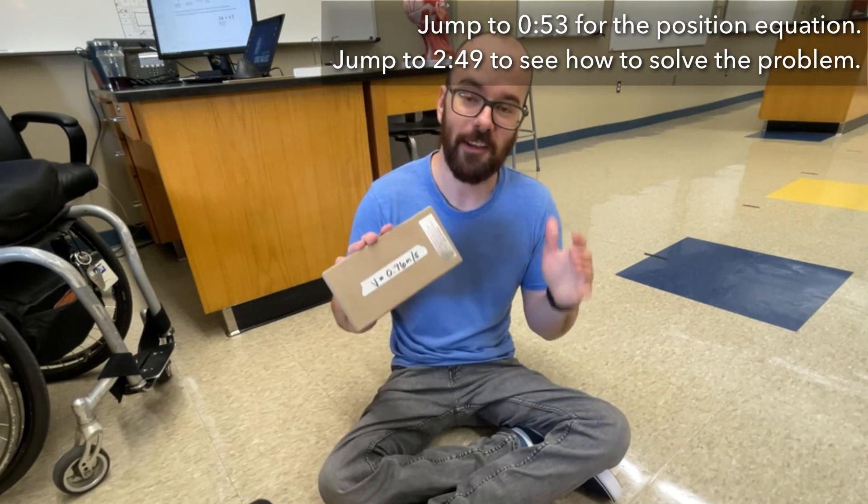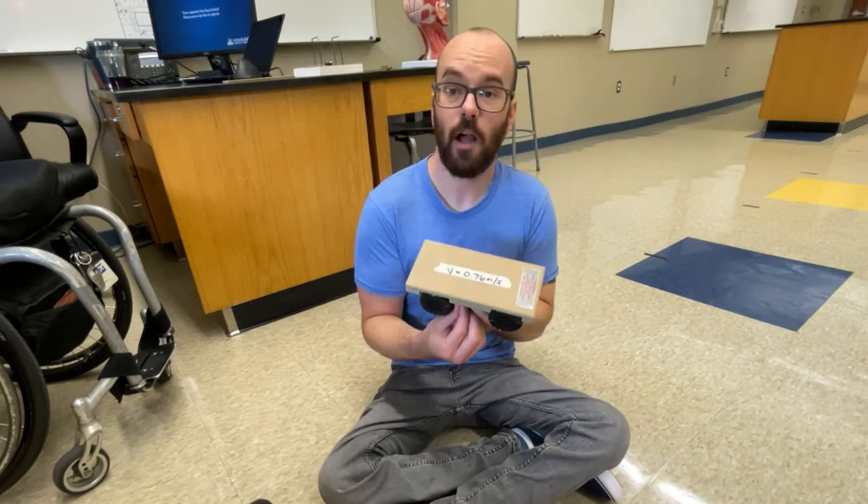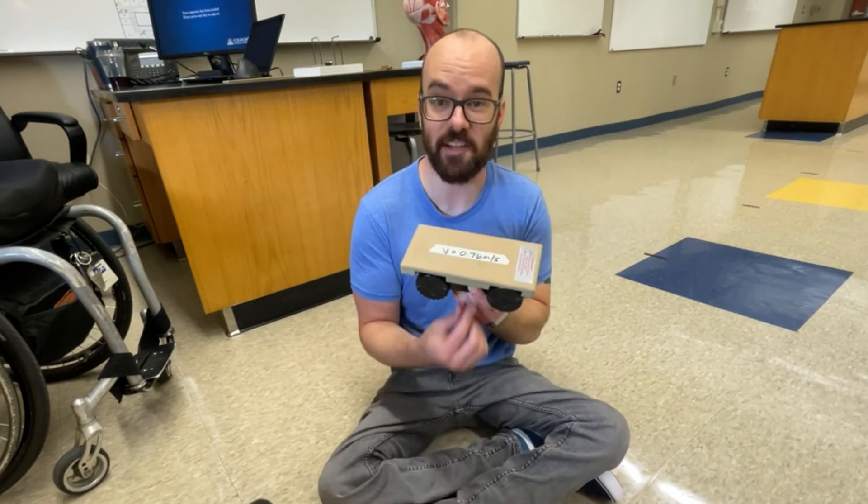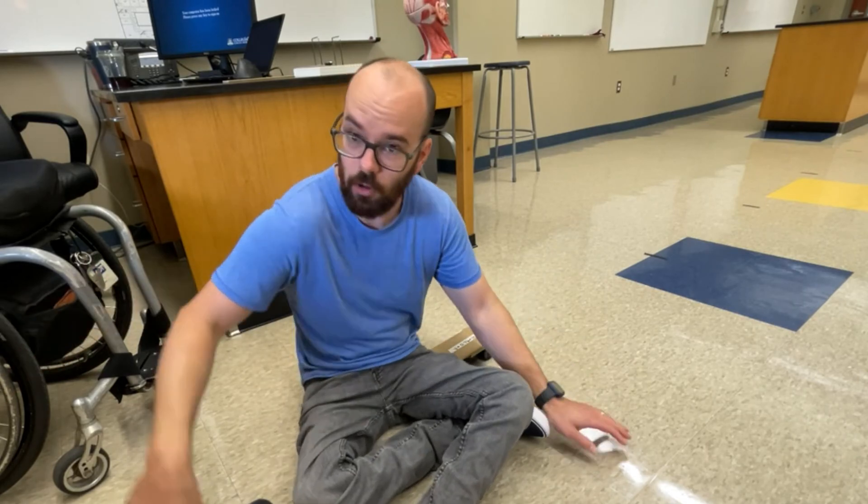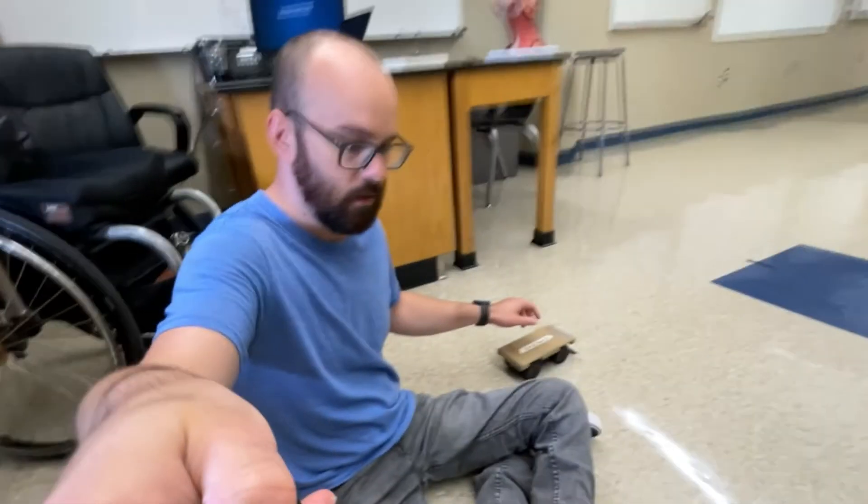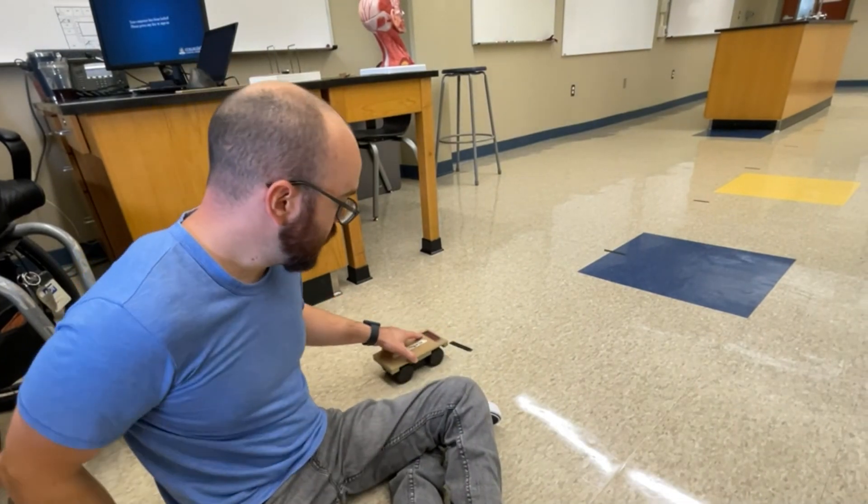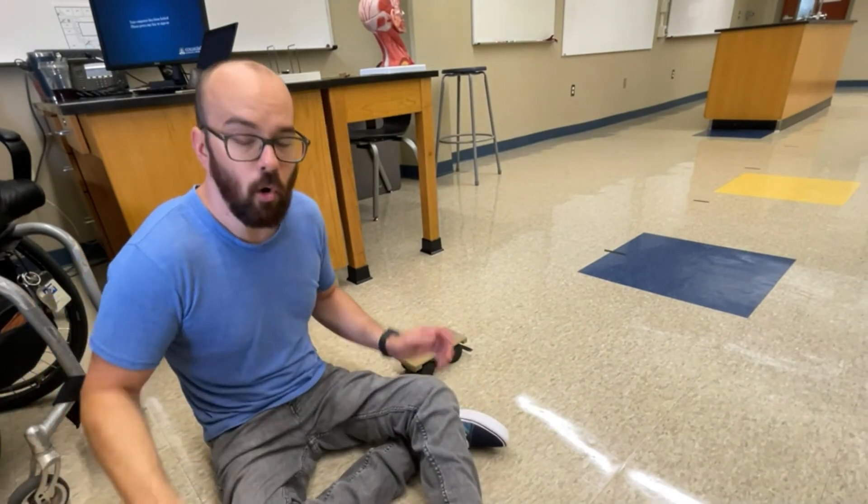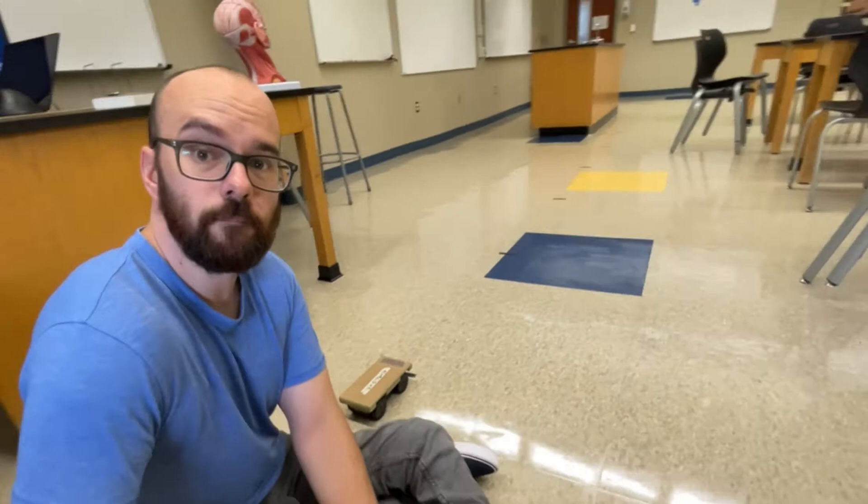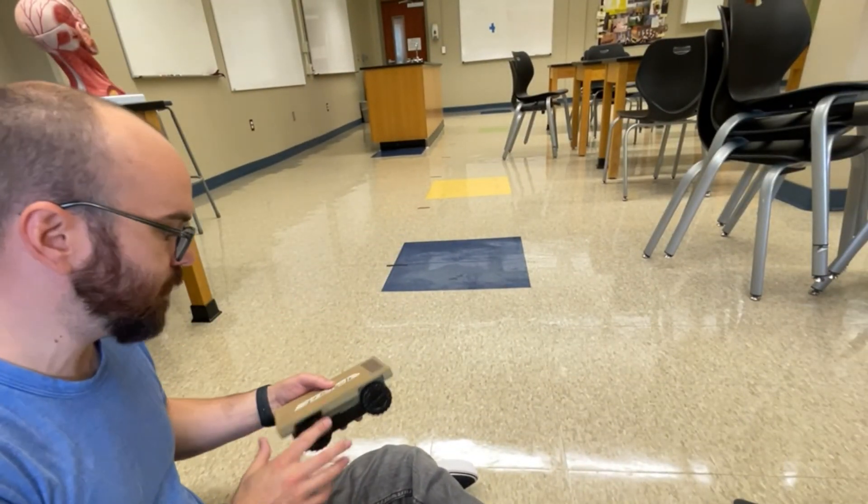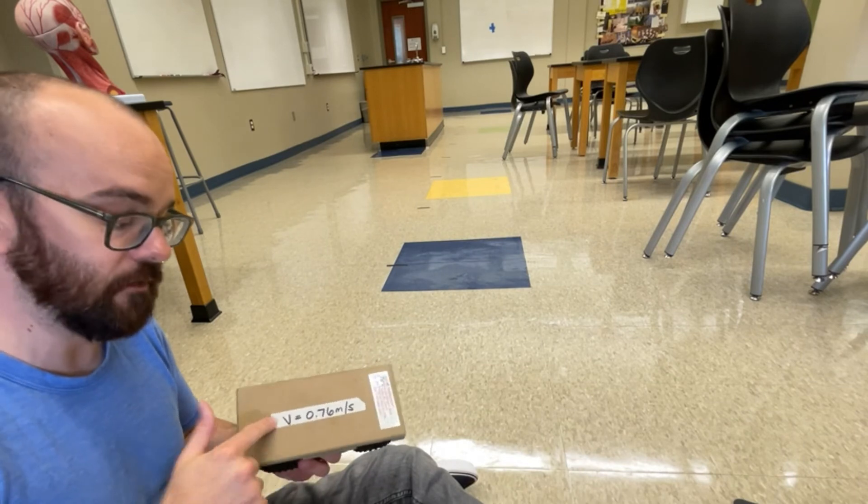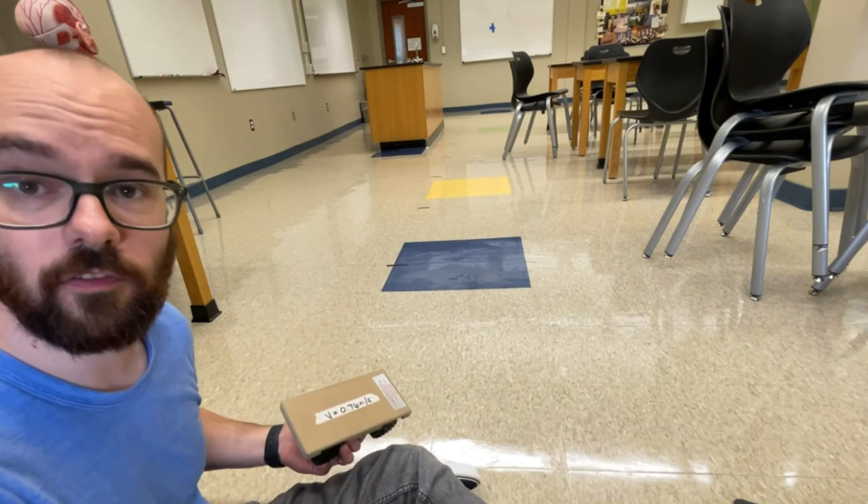Hey everyone, I'm down here on the floor in the name of physics and I've got a question. I've got this toy car that moves at a constant velocity of 0.76 meters per second and I'm going to start at a position of 2 meters from this wall over here. The whole length of my classroom is 11.7 meters. My question is: how many seconds is it going to take for this car to reach the far wall?